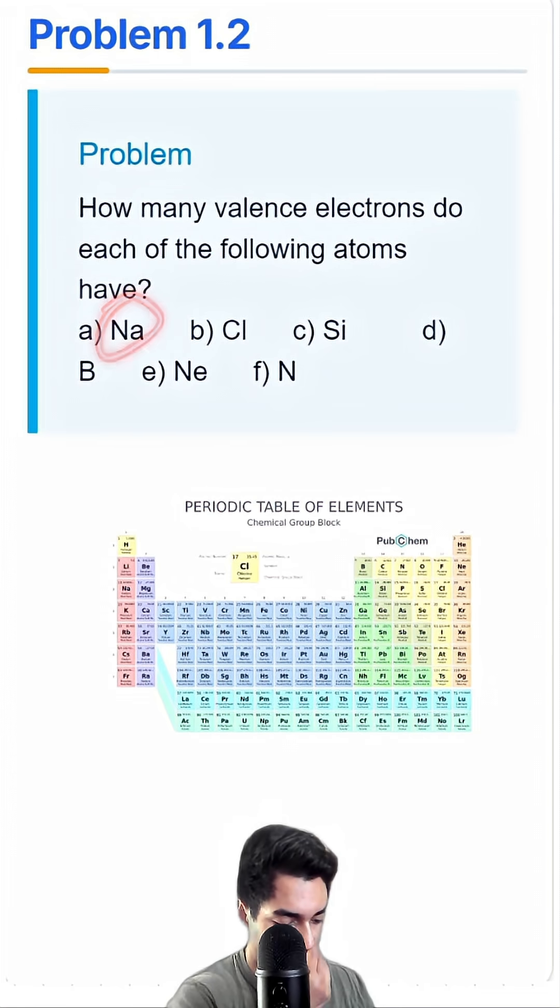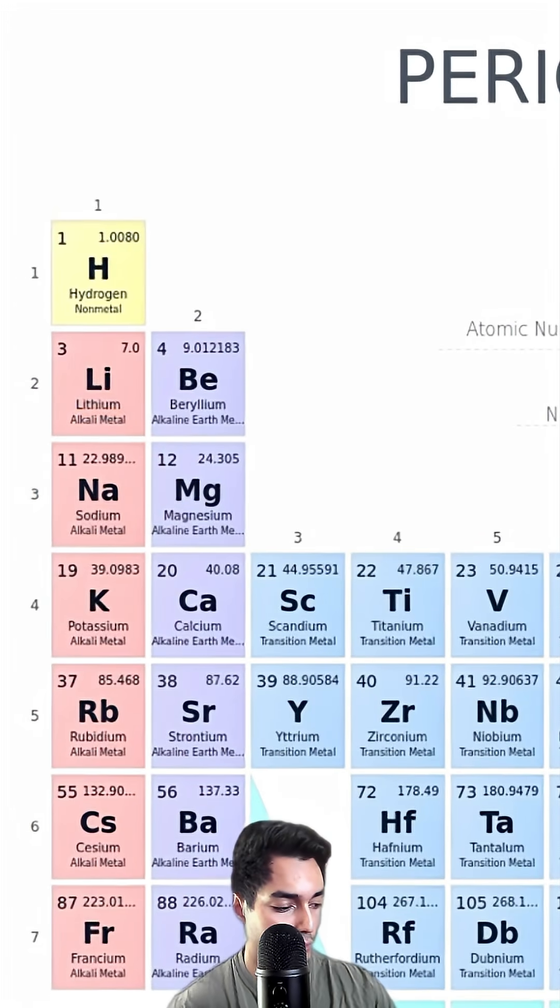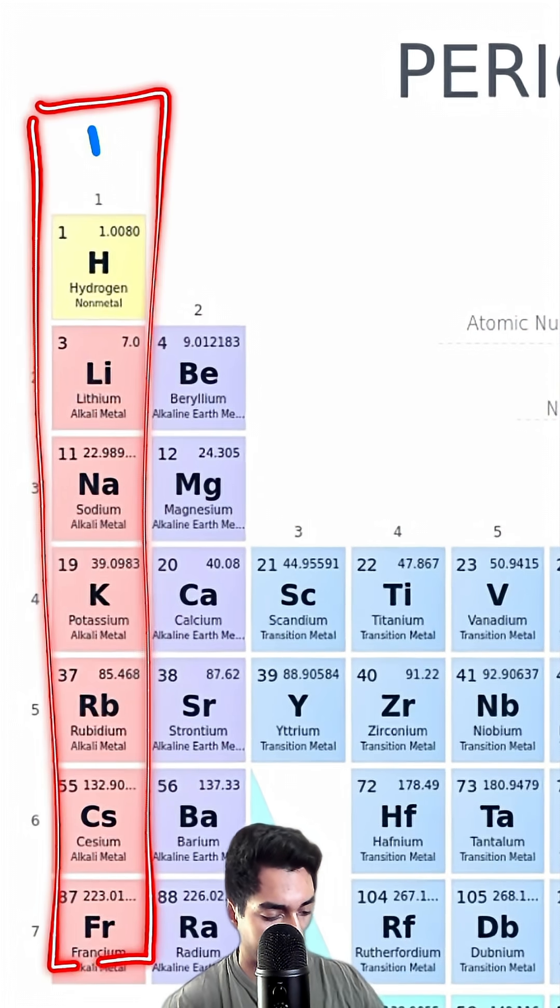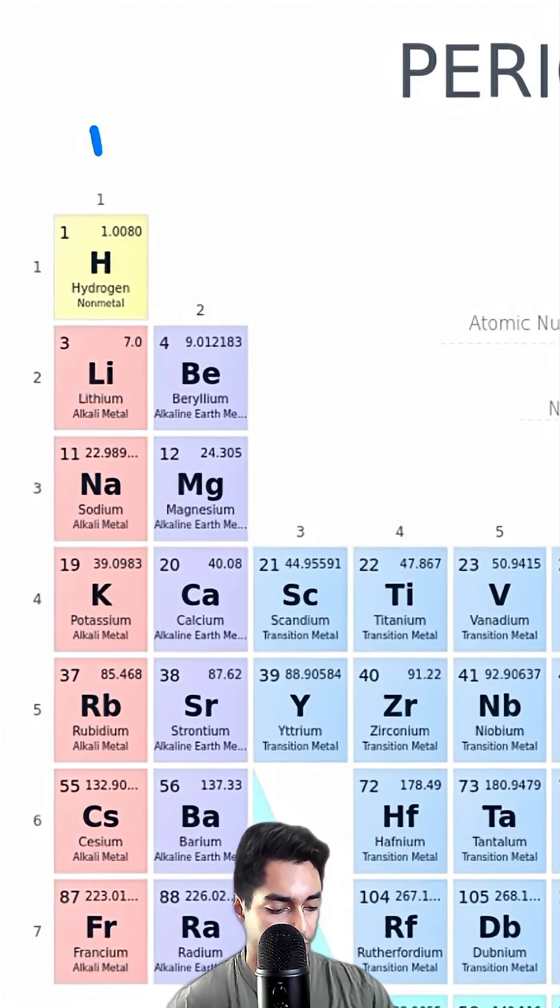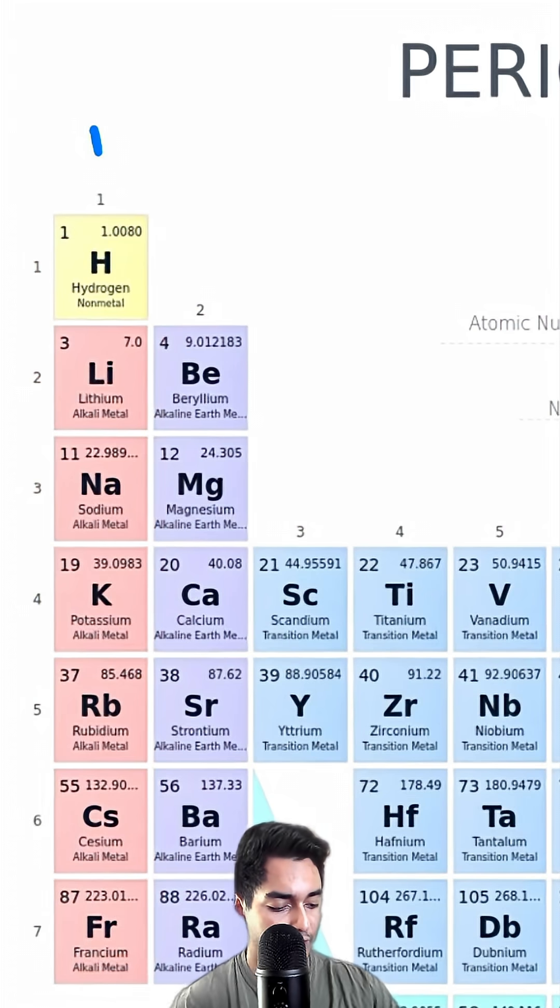We're going to look for sodium on the periodic table. Sodium lives right here. Notice that this is in group number one, the first column. Everything that lives in the first column is going to have one valence electron, at least these first few elements. So sodium has one.